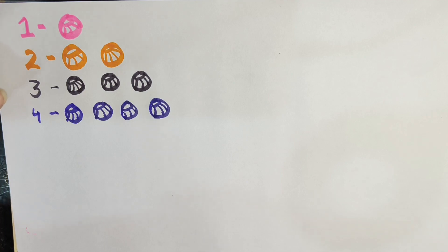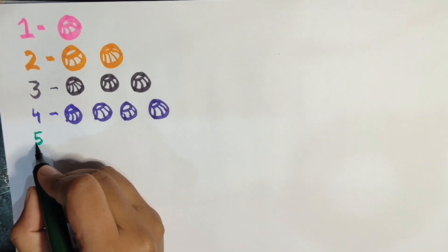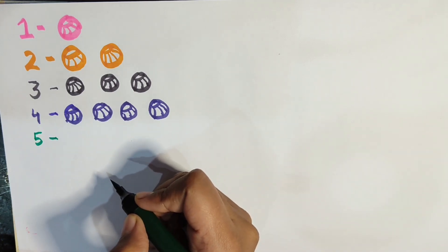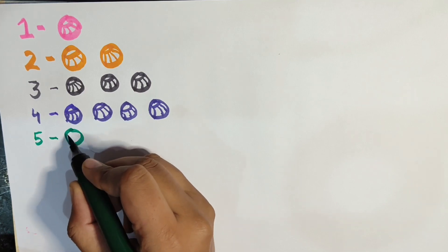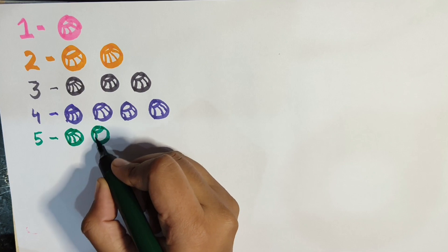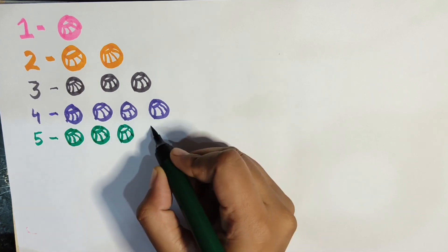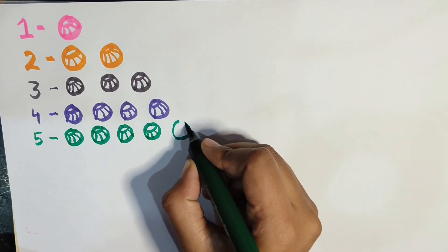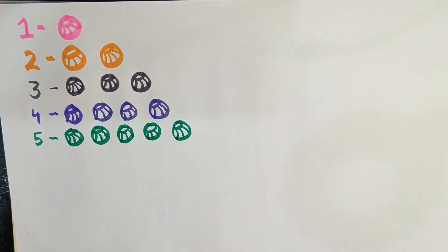1, 2, 3, 4. Now it comes 5. So in front of 5, how many balls do you have to make? You have to make 5 balls. So 1, 2, 3, 4, 5.